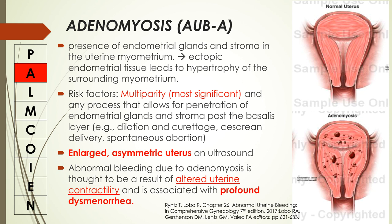Next is AUB-A, or AUB secondary to adenomyosis. Adenomyosis is defined as the presence of endometrial glands and stroma in the uterine myometrium, and this ectopic endometrial tissue leads to hypertrophy of the surrounding myometrium. Multiparity is the most significant risk factor, but any process allowing penetration of endometrial glands past the basalis layer — such as dilatation and curettage, cesarean delivery, and spontaneous abortion — can also lead to adenomyosis. Abnormal uterine bleeding due to adenomyosis is mostly secondary to altered uterine contractility and is associated with profound dysmenorrhea.